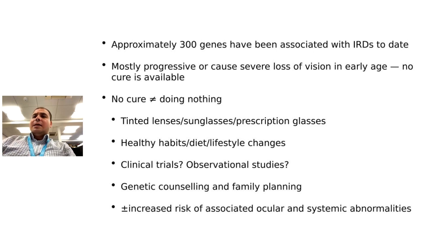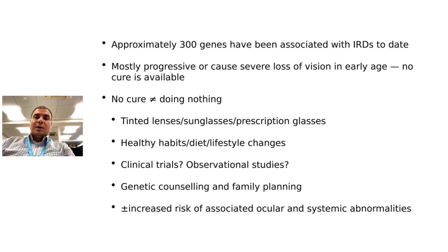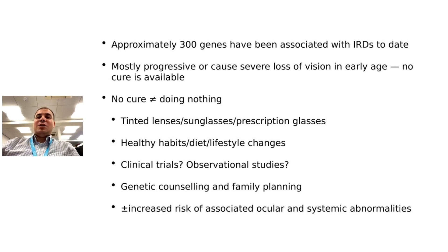There are approximately 300 genes associated with inherited retinal dystrophies today. Most of these diseases are progressive and may cause severe vision loss at an early age, and no cure is currently available. However, no cure is different from doing nothing. Many colleagues who don't work in genetics used to say we can finally treat these patients — but I have been treating my patients throughout my career. You can offer many things now without waiting.